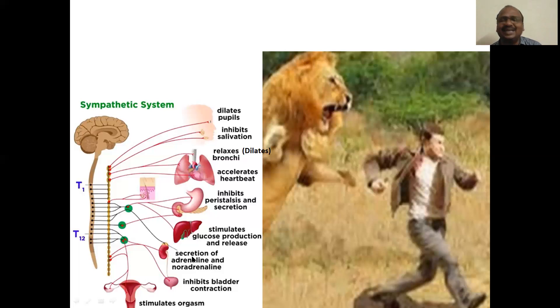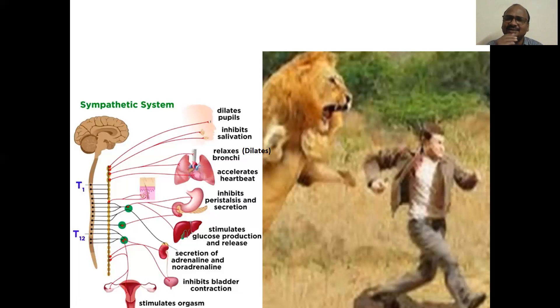Secretion of adrenaline and noradrenaline. These are the two neurotransmitters which are present in the sympathetic system.